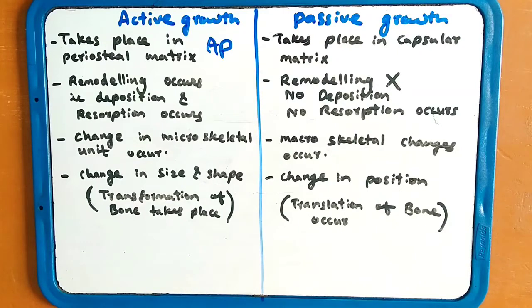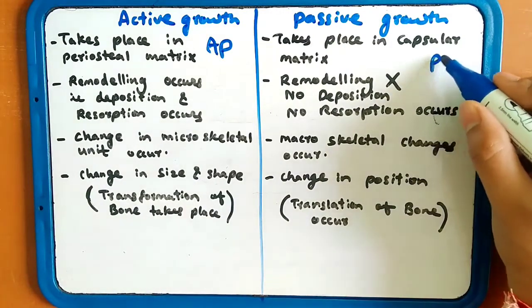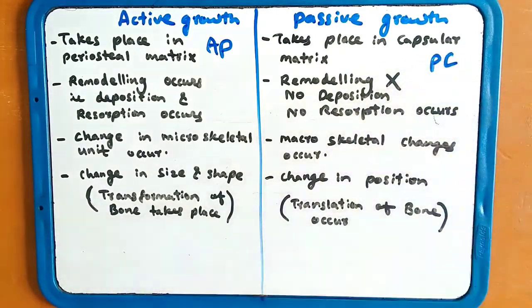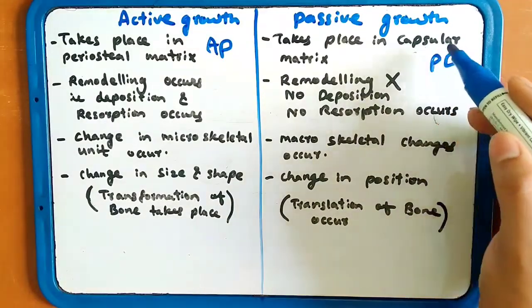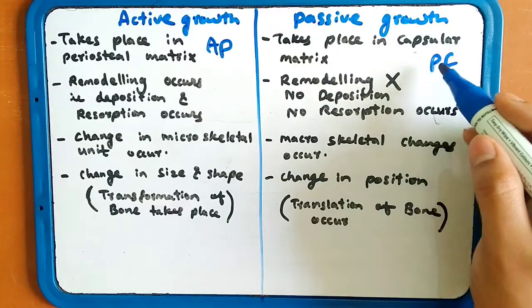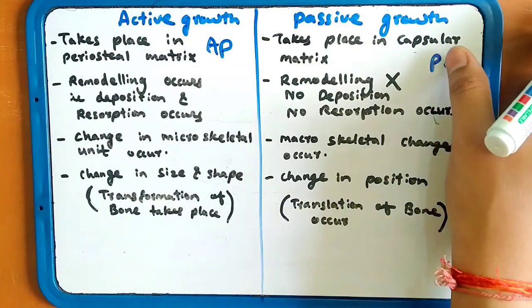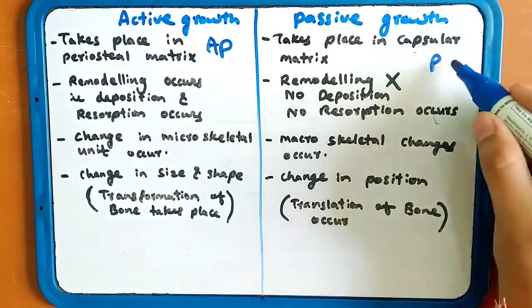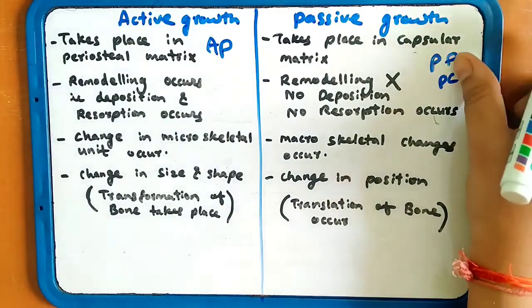Passive growth takes place in capsular matrix. The P comes in capsule, so you can say PP or PC — passive capsular.